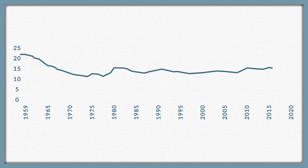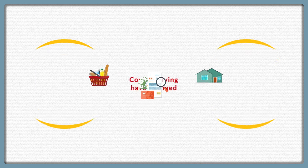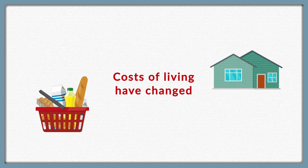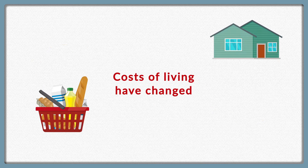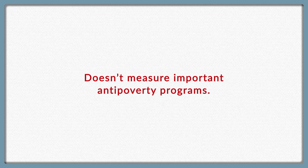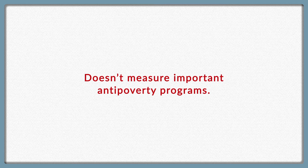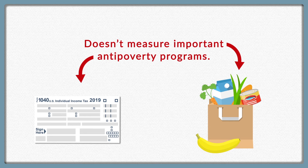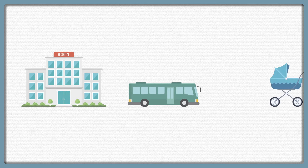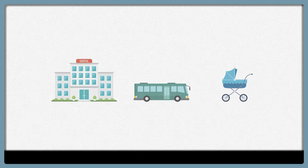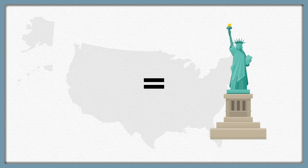But the formula behind the Official Poverty Measure has become outdated, as the cost of food has dropped while other costs like housing have gone up. Critics have said that the measure doesn't give us a complete picture of poverty in the United States, because it doesn't account for some of our most important anti-poverty programs, like refundable tax credits and SNAP, or food stamps. It also doesn't take into account necessary expenses for medical care, transportation, and childcare. And the threshold is the same whether you live in expensive places like New York City, or in places where housing costs less, like rural Wisconsin.